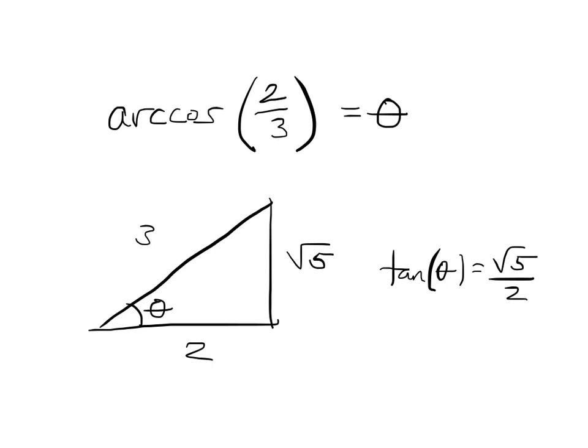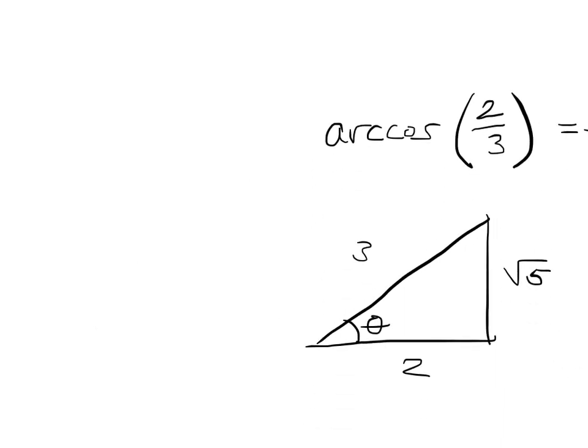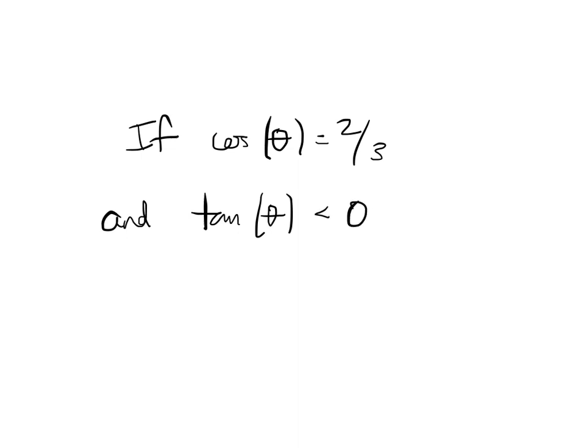A more difficult question could tell you something like, a more difficult question would say, if cosine of theta equals two-thirds, okay, and tangent of theta is negative, okay, then sine of theta equals,